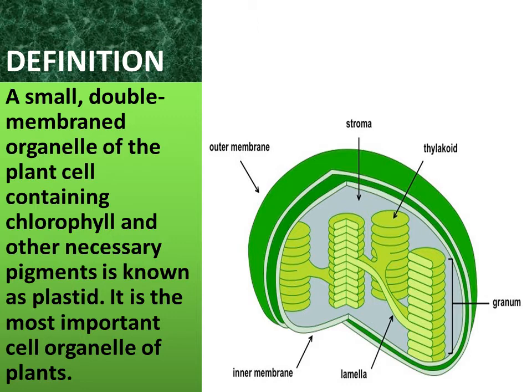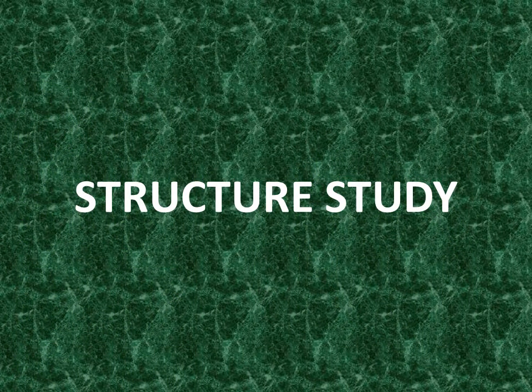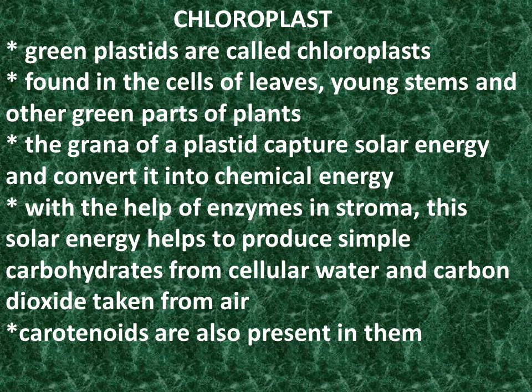It is the most important cell organelle of plants. Chloroplast: Green plastids are called chloroplasts, found in the cells of leaves, young stems, and other green parts of plants. The grana of a plastid captures solar energy and converts it into chemical energy. With the help of enzymes in the stroma, this solar energy helps to produce simple carbohydrates from cellular water and carbon dioxide taken from air. Carotenoids are also present in them. Chloroplasts are green because chlorophyll is present in them.